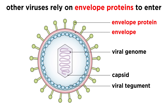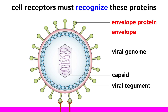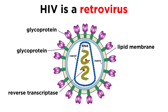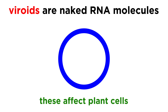Apart from bacteriophages, other viruses have envelopes, which allow them to enter and exit the cell by endocytosis and exocytosis without destroying the cell, so it is of great importance to the virus that it will be recognized by these surface receptors. Other viruses are considered retroviruses, because they contain an enzyme called reverse transcriptase, which transcribes an RNA template into DNA — which is the opposite of normal transcription.